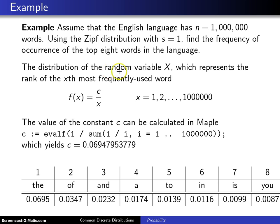So the distribution of the random variable X, which represents the rank of the x most frequently used word, is f of x equals c divided by x, and c is that constant that makes things sum to one. And that's for x equals one, two on up to a million.